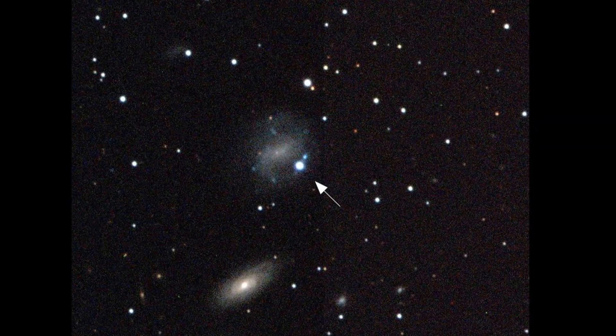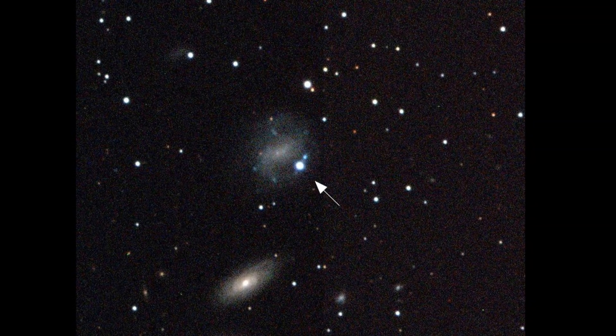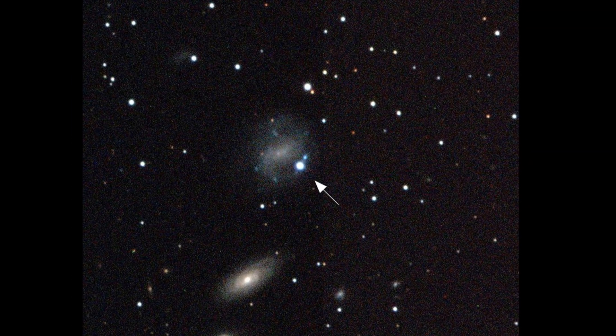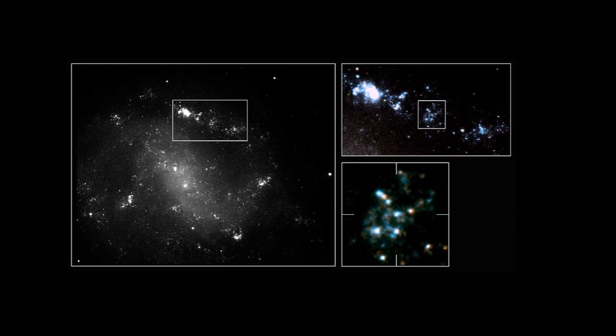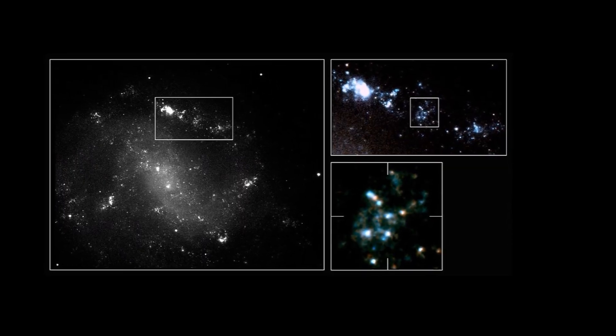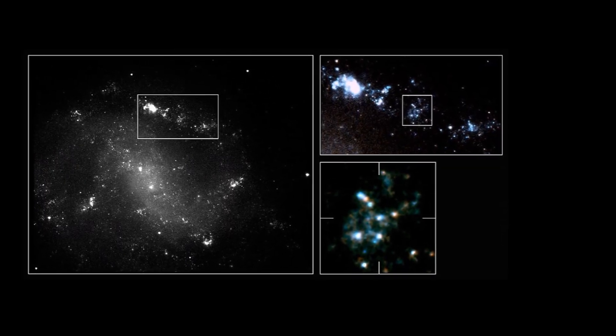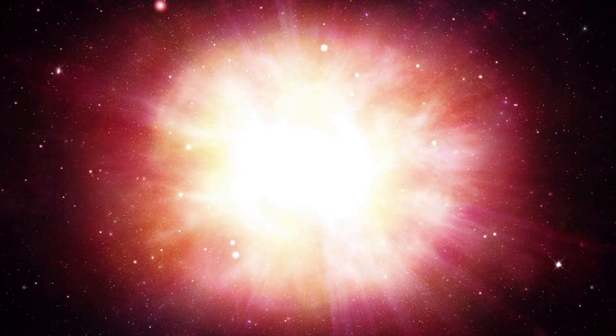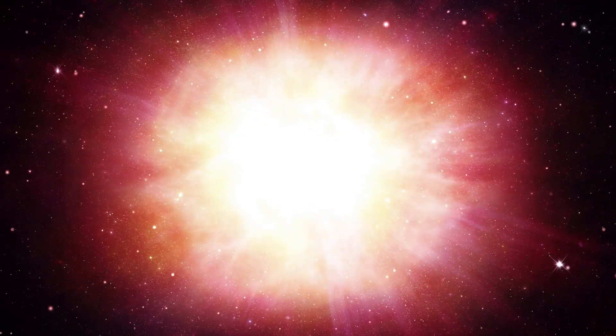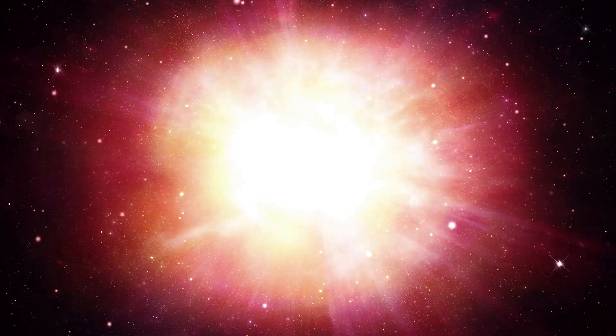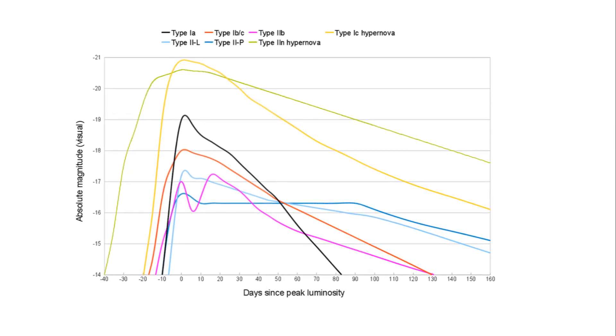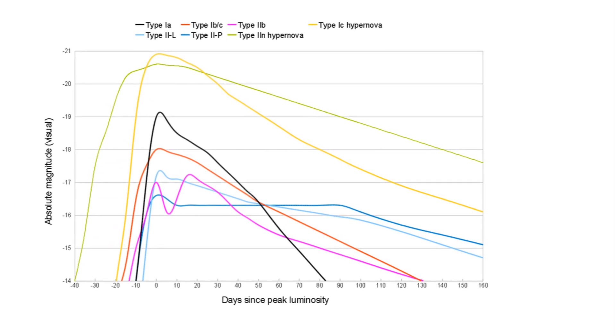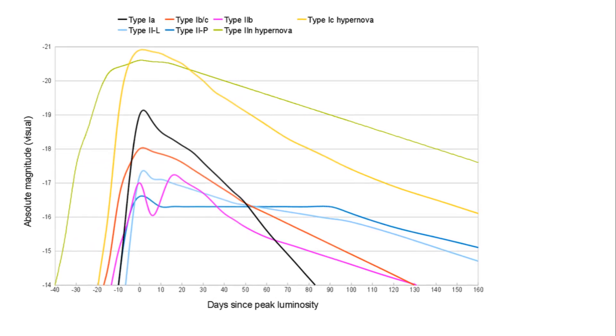One of the most famous examples of a hypernova is SN 1998 BW, which was observed in 1998. This event occurred in a distant galaxy and was linked to a gamma-ray burst, specifically GRB 980425. The explosion from SN 1998 BW was so powerful that it was classified as a hypernova. Astronomers were shocked because its energy output far exceeded that of typical supernovae, and it seemed to be connected directly to the gamma-ray burst.